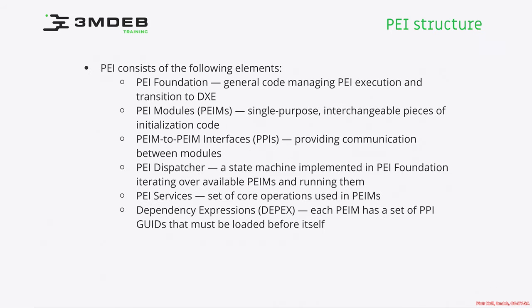How does the PEI structure look? PEI consists of the following elements. First, there is the PEI Foundation, which wraps the phase, schedules what is executed, manages PEI execution, and handles the transition to the next phase — DXE. It manages loading the PEI modules, known as PEIMs, which are single-purpose, interchangeable pieces of initialization code — essentially very early stage drivers.